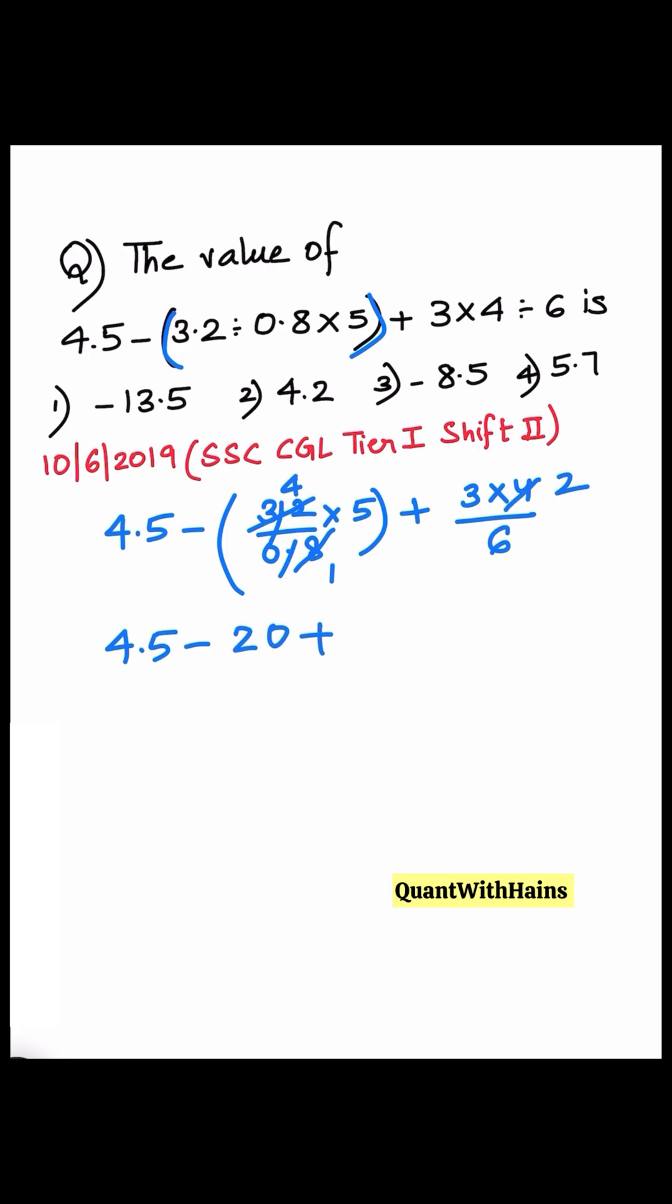2 times 3 is 6. We get 4.5 plus 2, which is 6.5, minus 20.